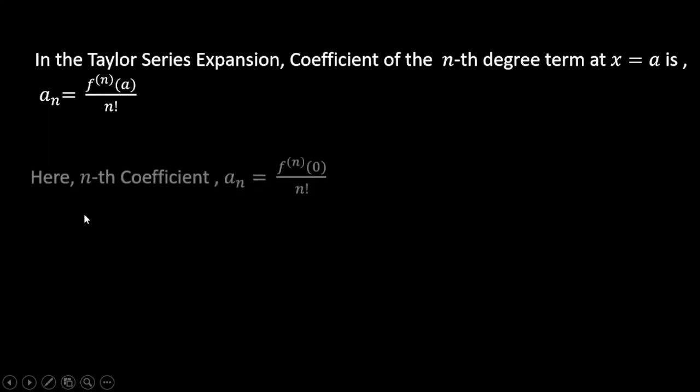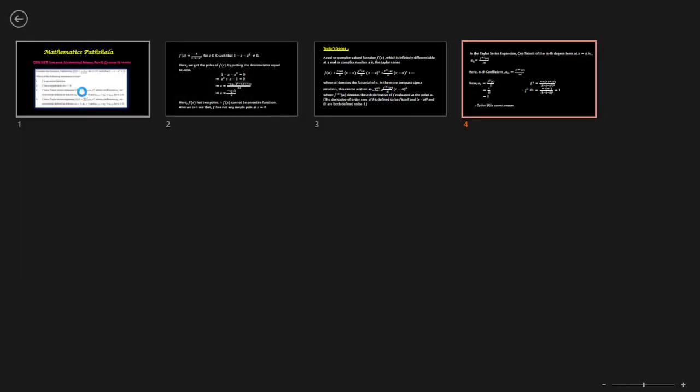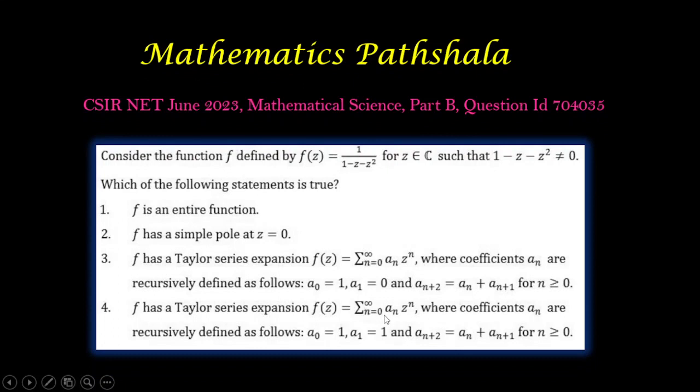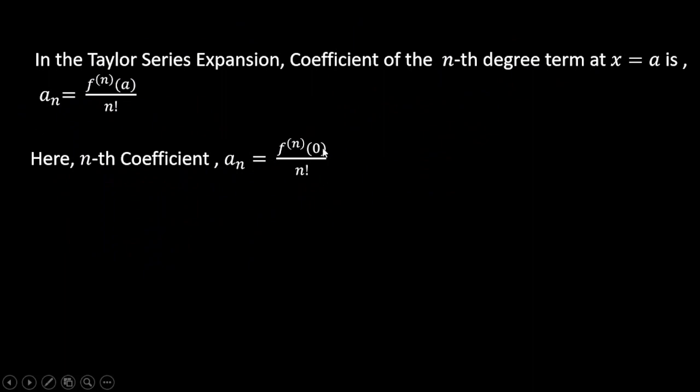So here the nth coefficient aₙ = f⁽ⁿ⁾(0)/n! because here the option is given in numbers 3 and 4, the Taylor expansion is given as Σ(n=0 to ∞) aₙzⁿ. So here a is equal to 0. So here we have to find the nth degree derivative at 0.